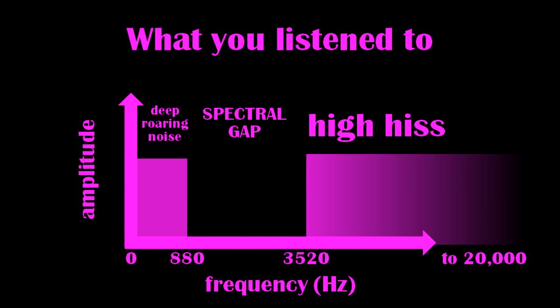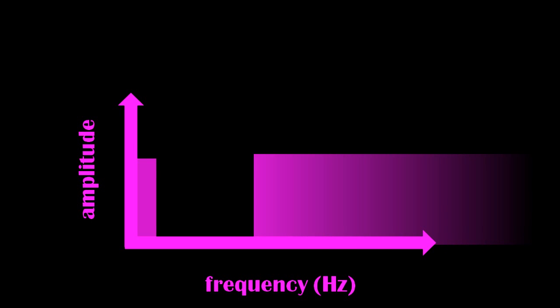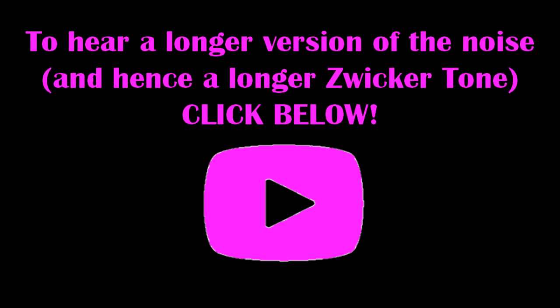We're going to listen to another audio sample, and this time what I've done is to shift the spectral gap. I may have shifted it to the right to higher frequencies, or maybe I shifted it to the left to lower frequencies. By listening to the Zwicker tone, you should be able to tell which way the spectral gap was moved. So, here we go. Did you hear the Zwicker tone? Was it higher than before, or lower than before? Leave your answer in the comments below, and if you want to check to find out whether you're right, have a look in the video description.